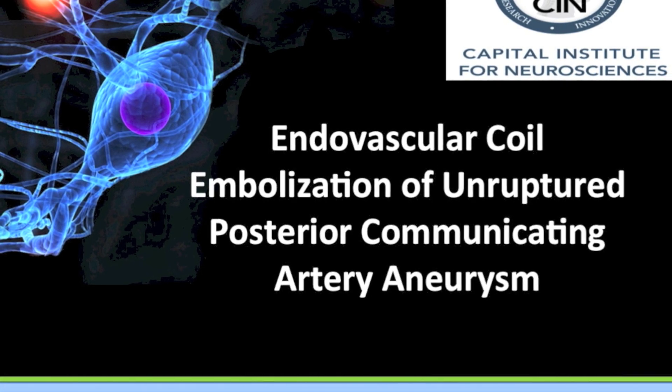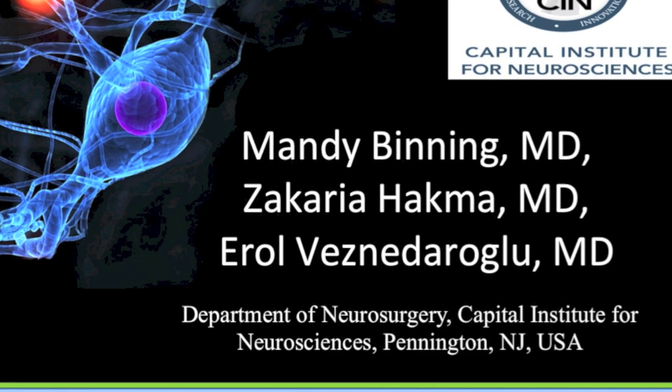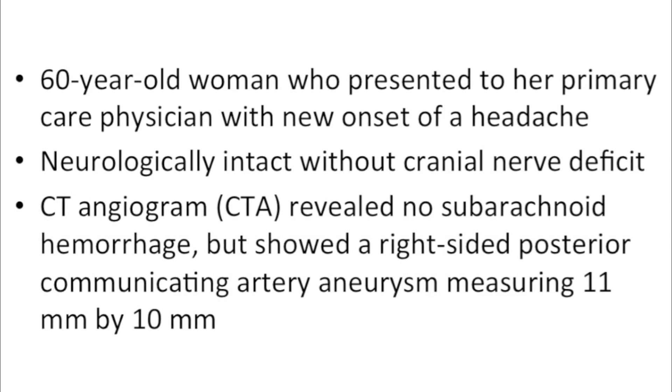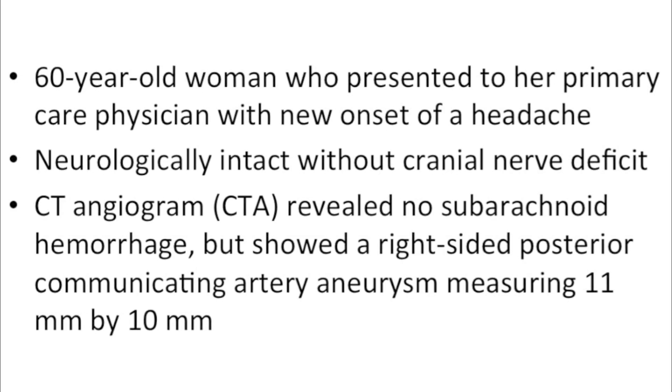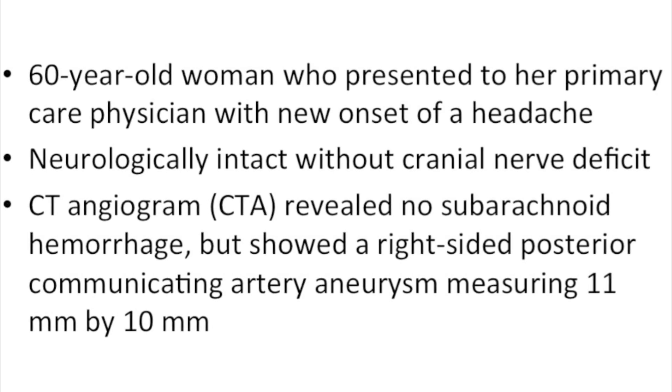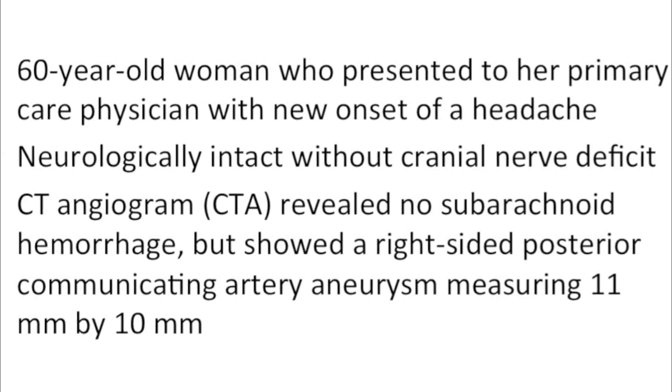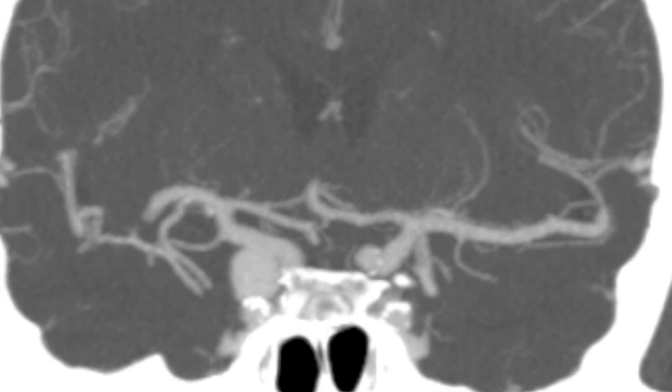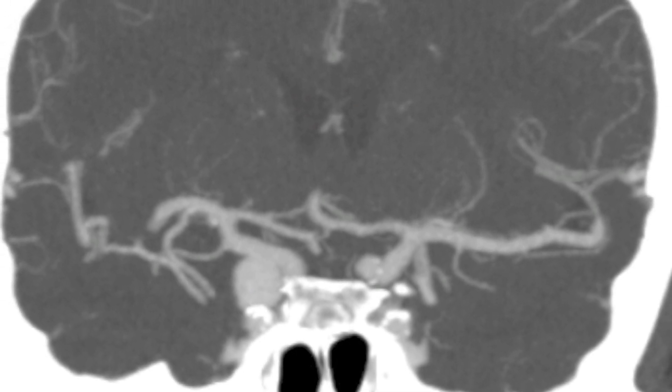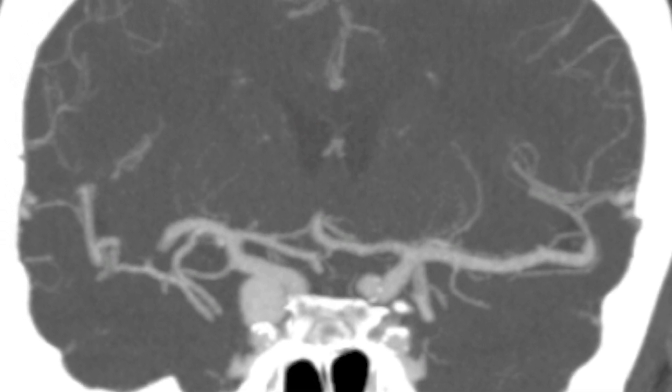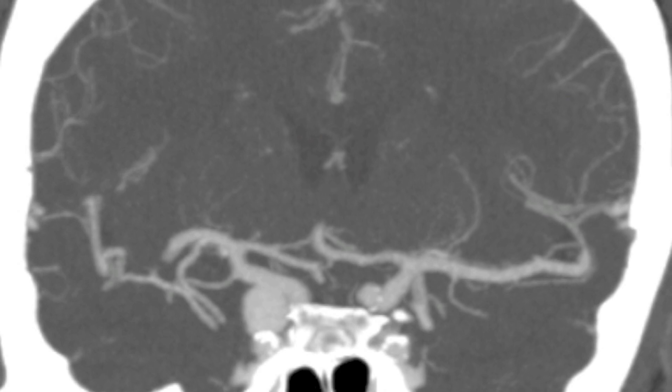Endovascular coil embolization of unruptured posterior communicating artery aneurysm. The patient is a 60-year-old woman who presented to her primary care with a new onset of a headache. She was neurologically intact without cranial nerve deficit but was found by CT angiography to have no subarachnoid hemorrhage but a posterior communicating artery aneurysm on the right measuring a centimeter by a centimeter.